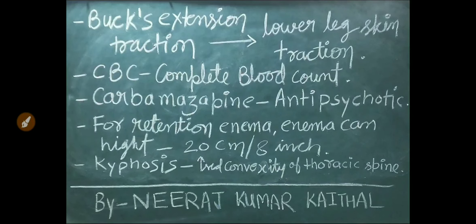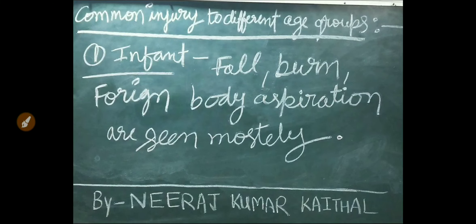Buck's extension traction is a lower leg skin traction. CBC stands for complete blood count. Carbamazepine is an anti-epileptic drug. For retention enema, the enema can height is 20 cm or 8 inches. Kyphosis is increased convexity of the thoracic spine. Common injuries in infants include falls, burns, and foreign body aspiration.